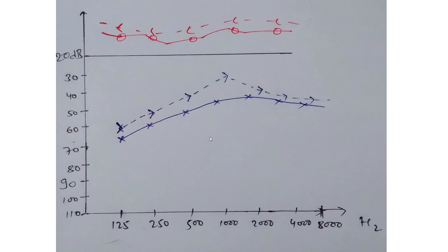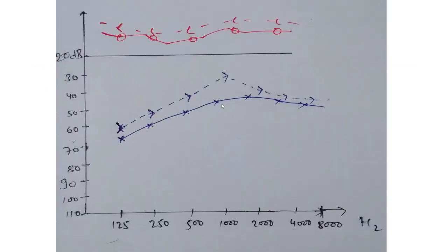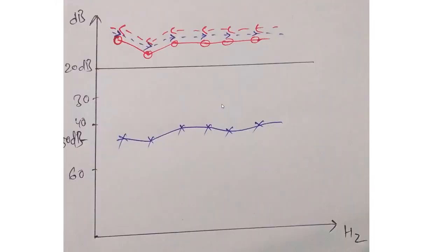To calculate the pure tone average, look at the air conduction thresholds at 500, 1000, and 2000 hertz and calculate the average. For example, if thresholds are approximately 55 dB at 500 Hz, 50 dB at 1000 Hz, and 45 dB at 2000 Hz, the average is 50 decibels. According to the classification of hearing loss, 50 dB is a moderate hearing loss. So this patient has moderate sensorineural hearing loss in the left ear, while the right ear is normal.